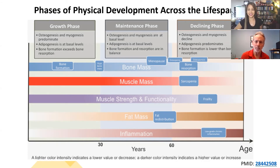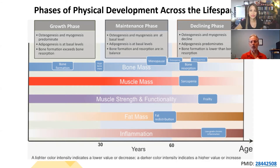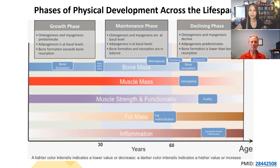Most people died even before that for the first couple million years as hominids here on Earth. So this is really a great chart that explains things we're still discovering. And that's a really good point — the last third of our lives past 60 is called the declining phase.